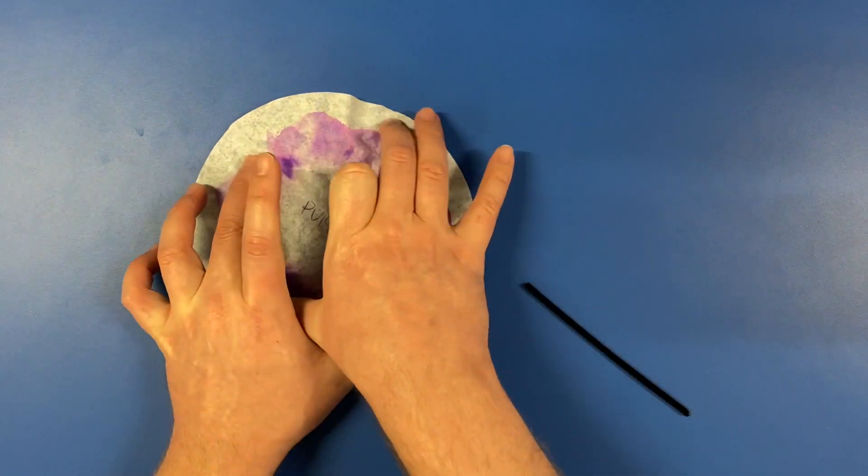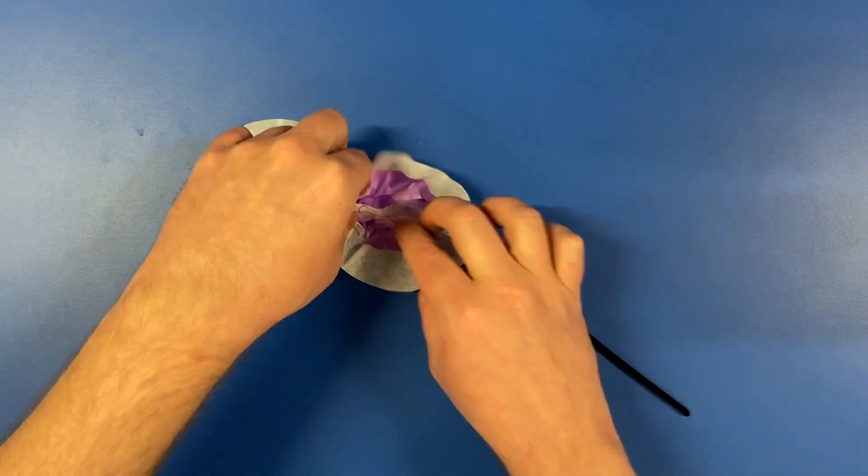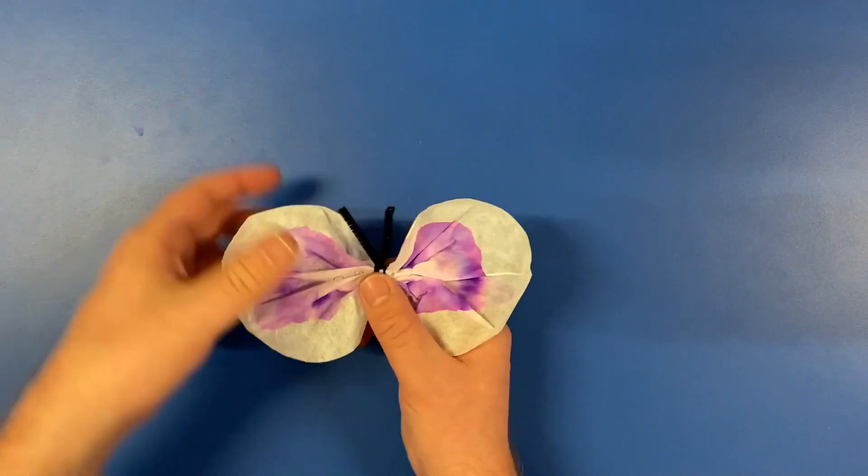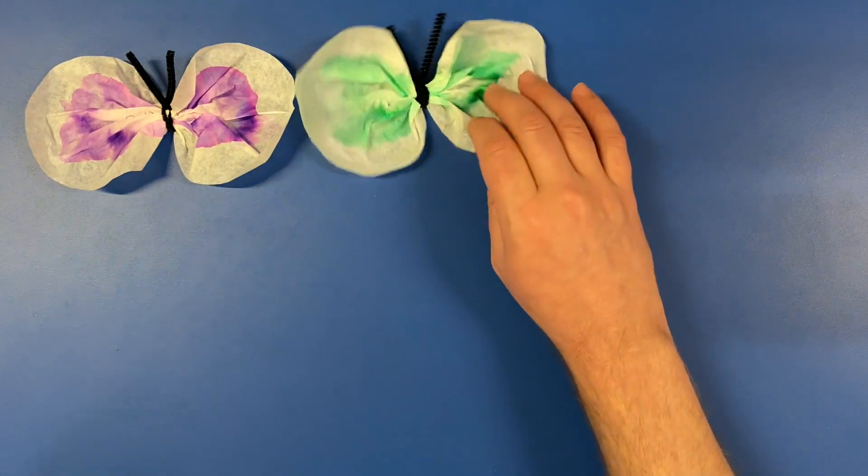To create a butterfly from the filter, just scrunch it up in the middle and twist a pipe cleaner around it to hold it in place and to become the antenna. You can do this for all of them.